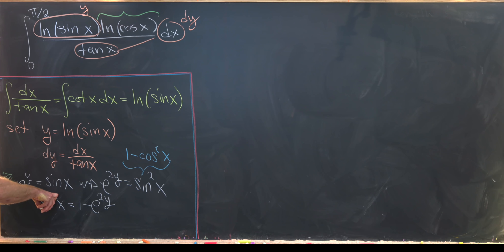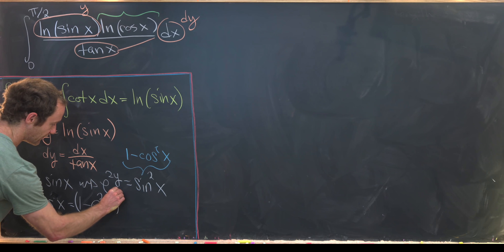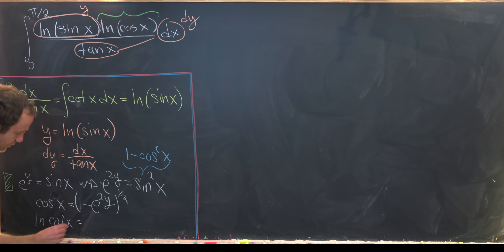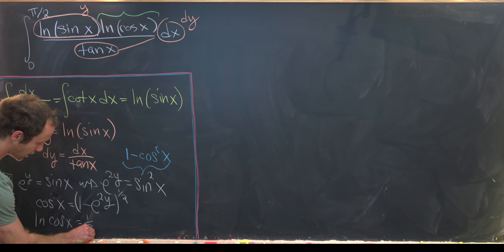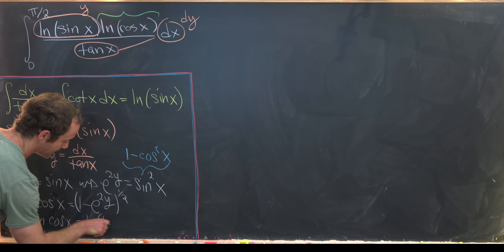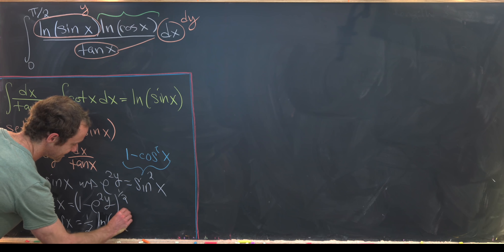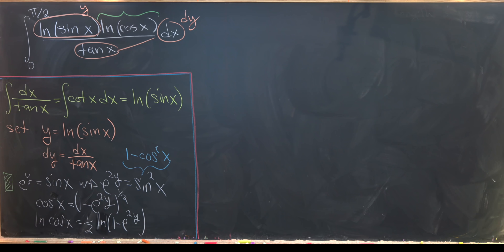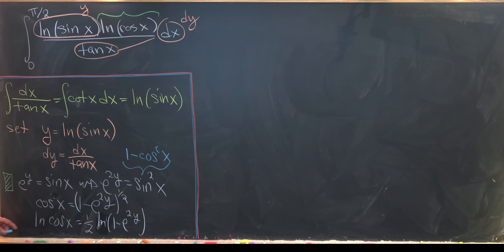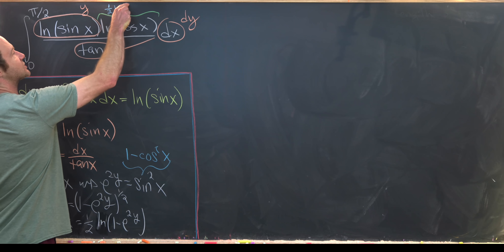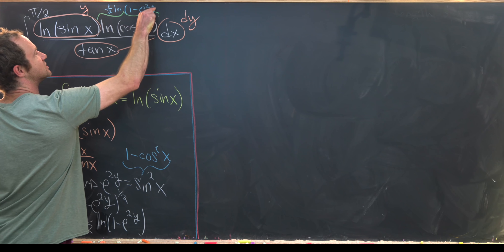Now take the square root of both sides — raise to the half power — then take the natural log of both sides. Using log rules, the natural log of cosine of x equals one-half times the natural log of 1 minus e^(2y), where the half is brought out front by log rules. So let's bring that up and notice that the ln(cos x) term becomes ½ ln(1 − e^(2y)).